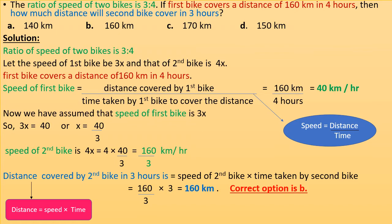The ratio of speed of two bikes is 3:4. Let the speed of the first bike be 3x and that of the second bike be 4x. The first bike covers 160 km in 4 hours, so speed of the first bike equals distance divided by time: 160 km divided by 4 hours equals 40 km per hour.